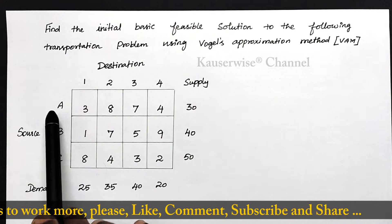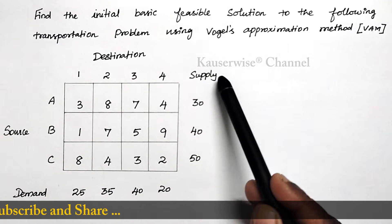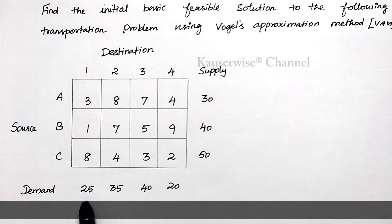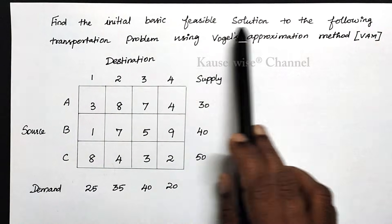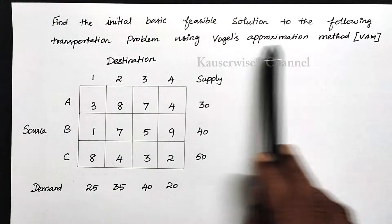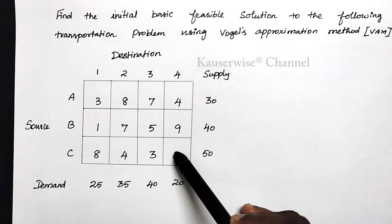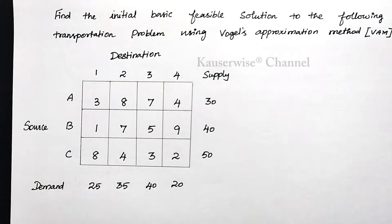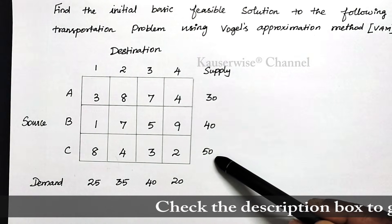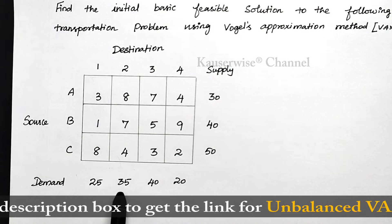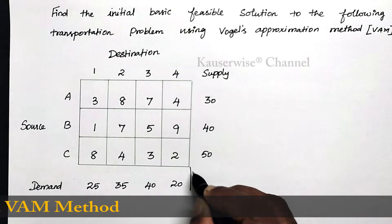Here we have a cost matrix with 3 sources — A, B, C — and 4 destinations — 1, 2, 3, 4. Supply values are 30, 40, 50, and demand values are 25, 35, 40, 20. First we need to check whether the problem is balanced or unbalanced. Supply total: 30 + 40 + 50 = 120. Demand total: 25 + 35 + 40 + 20 = 120. So this problem is balanced and we can proceed further.